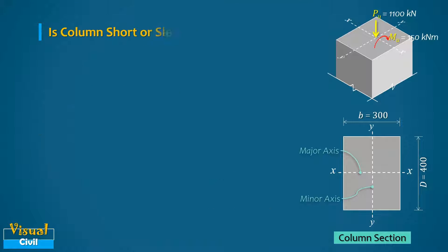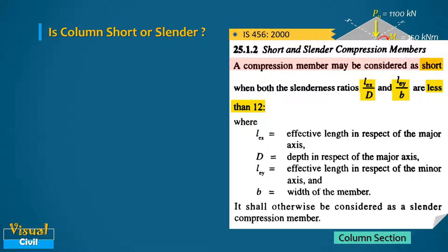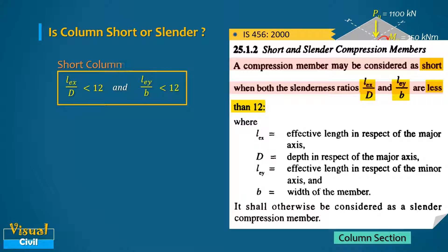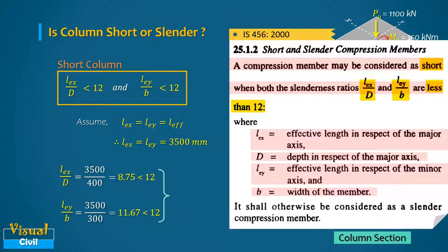First, determine whether the column is short or slender. As per IS 456:2000, a column may be considered short when both slenderness ratios lex/D and ley/b are less than 12, where lex and ley are the effective lengths about the major and minor axes, D is the depth about the major axis, and b is the width. Taking lex = ley = 3500 mm, we get lex/D = 8.75 and ley/b = 11.67. Both are less than 12, hence this is a short column.